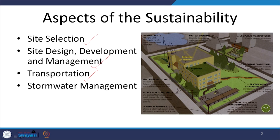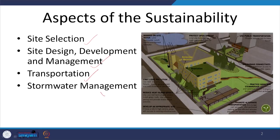Next we have transportation, because for any site the transportation to and from the site becomes very important. What are the options available and what strategies can be provided while we are developing — these possibilities and opportunities will have to be planned right in the beginning when the site is being designed. And then we have stormwater management. All these aspects will be looked at in detail when we are talking about the sustainable development of a site.